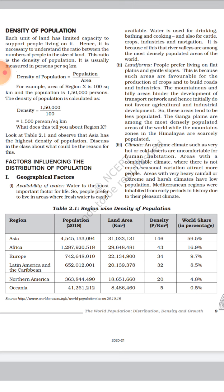There are various factors that influence the distribution of population. The first is availability of water. Water plays a very crucial role in distribution of population. For example, Gangetic Plain states like Uttar Pradesh, Bihar, Haryana, and Punjab are mostly densely populated as compared to hilly states like Himachal Pradesh, Uttarakhand, and northeastern states.